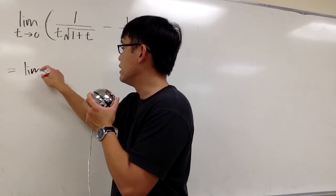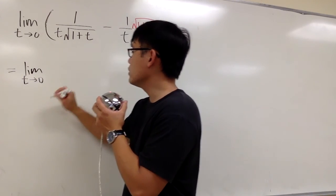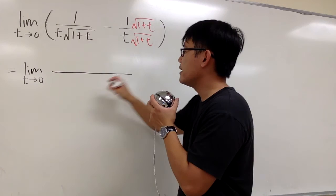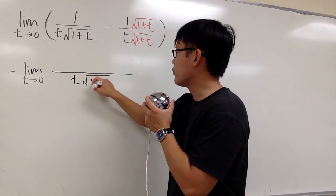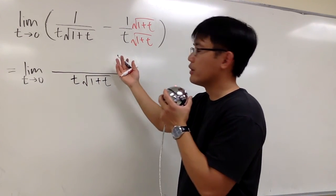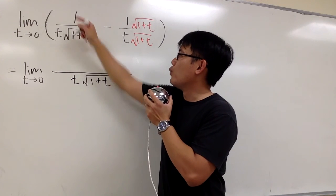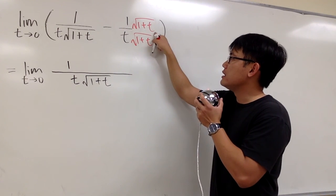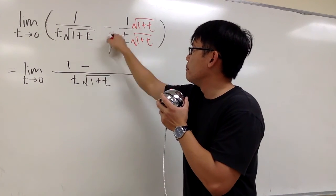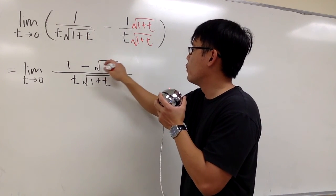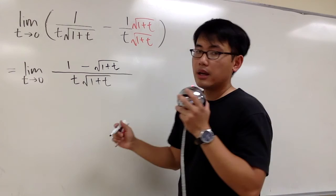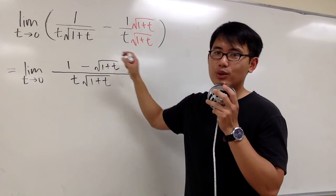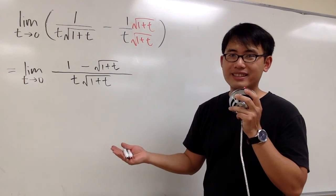This is going to be the limit as t goes to 0. We can put both fractions together with the same denominator, t times square root of 1 plus t. For the numerator, it's going to be 1 minus 1 times the square root of 1 plus t, which is just minus the square root of 1 plus t. Now if we plug 0 into all the t's, we still end up with 0 over 0, so we still have to do more work.